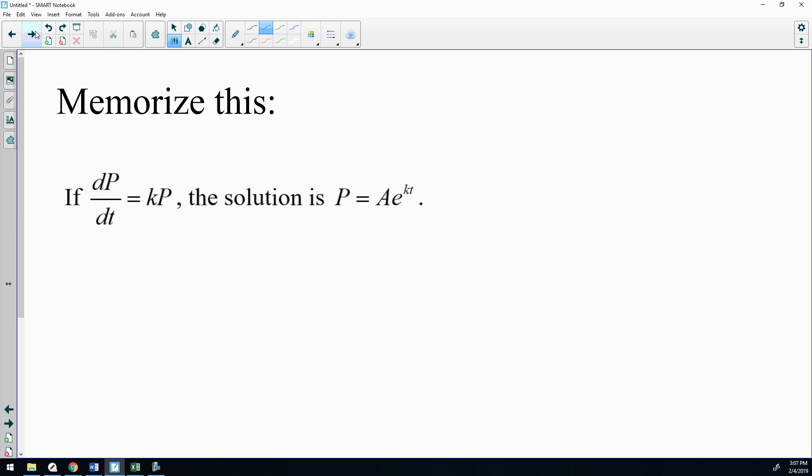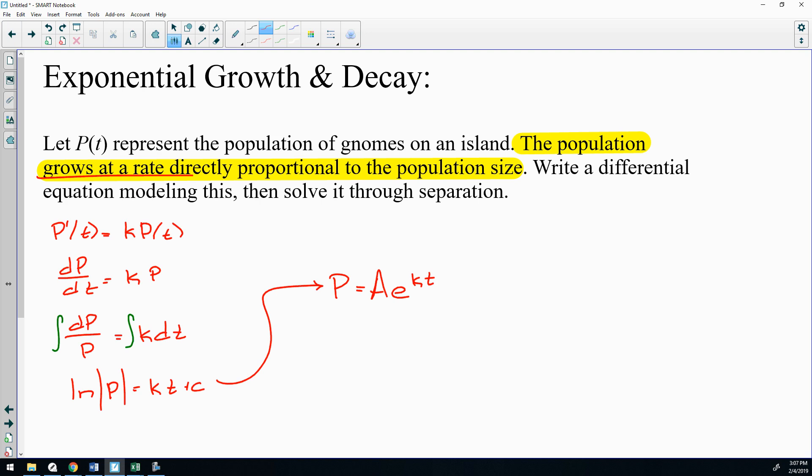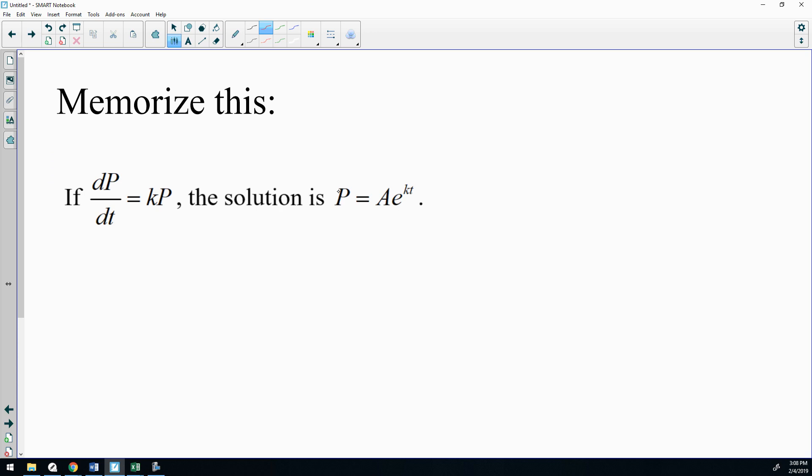This differential equation, dP/dt equals kP, happens so frequently, I would say go ahead and memorize the solution because it can save you some time. If you can memorize and recognize that differential equation and know that the solution is going to be P equals Ae^(kt), it can save you all of this time of separating and solving. But the one thing to remember is only use the memorized solution if it shows up in a multiple choice question. If it's a multiple choice question, then by all means, skip all the steps and just write down the solution.